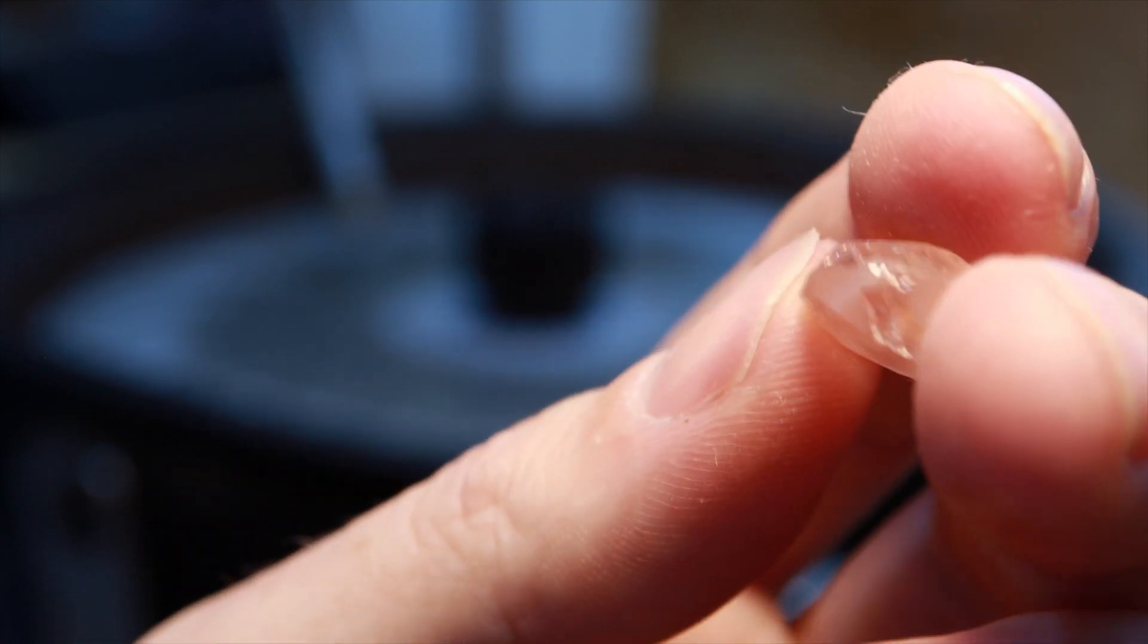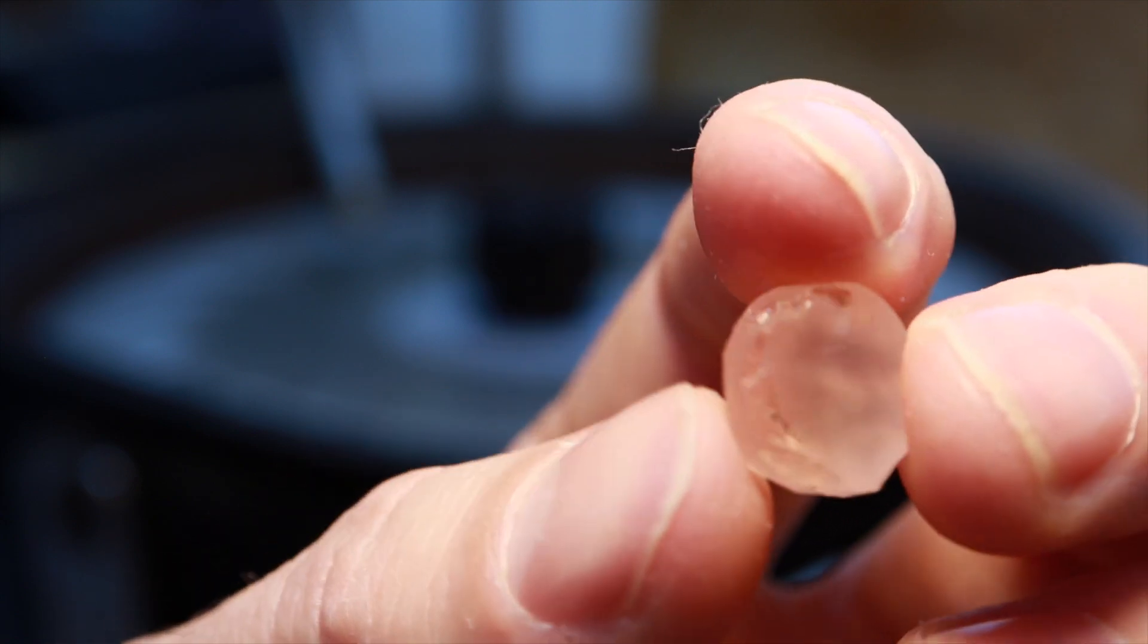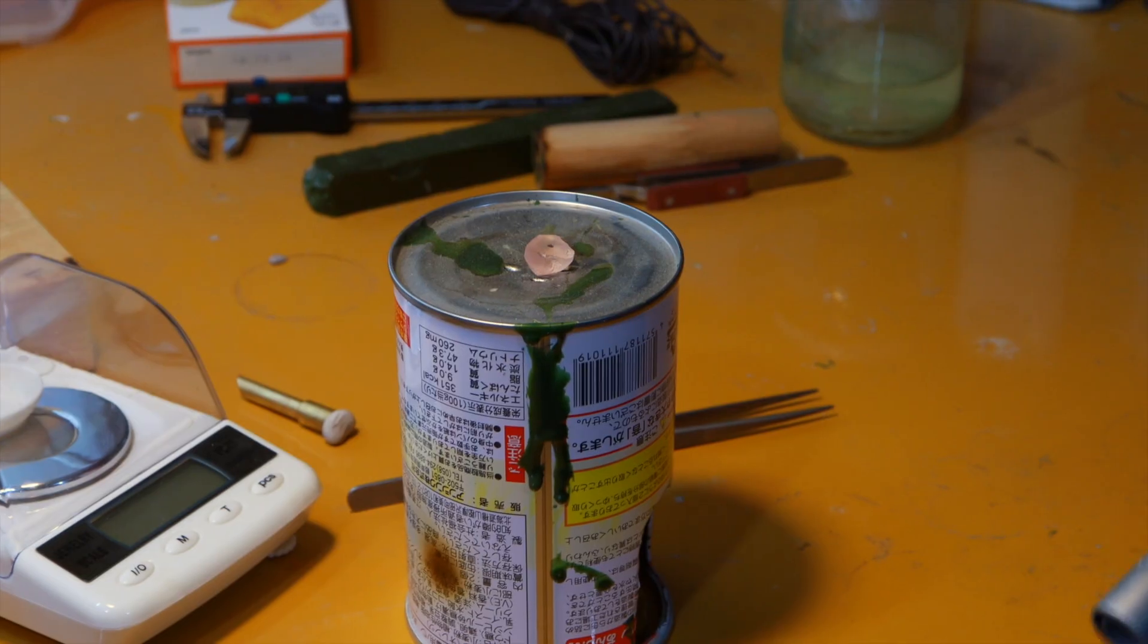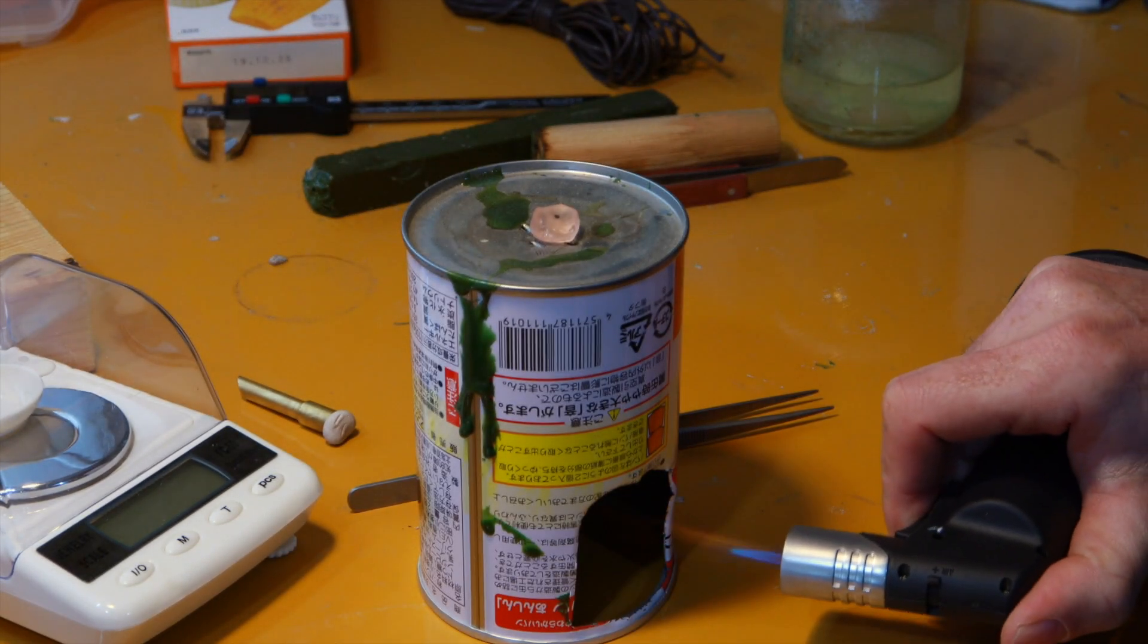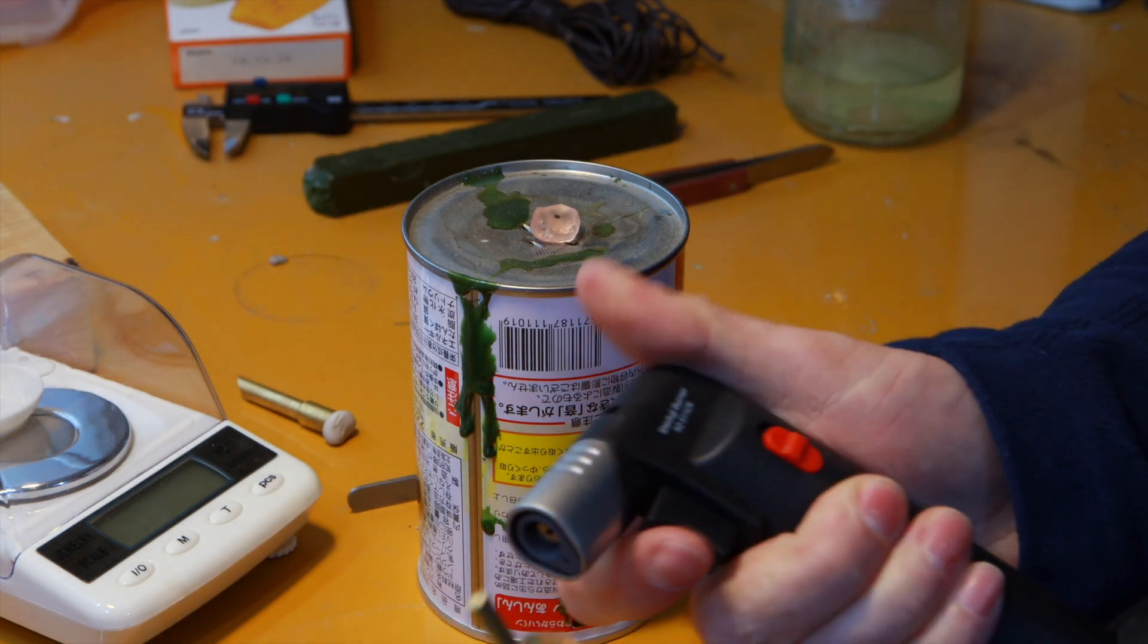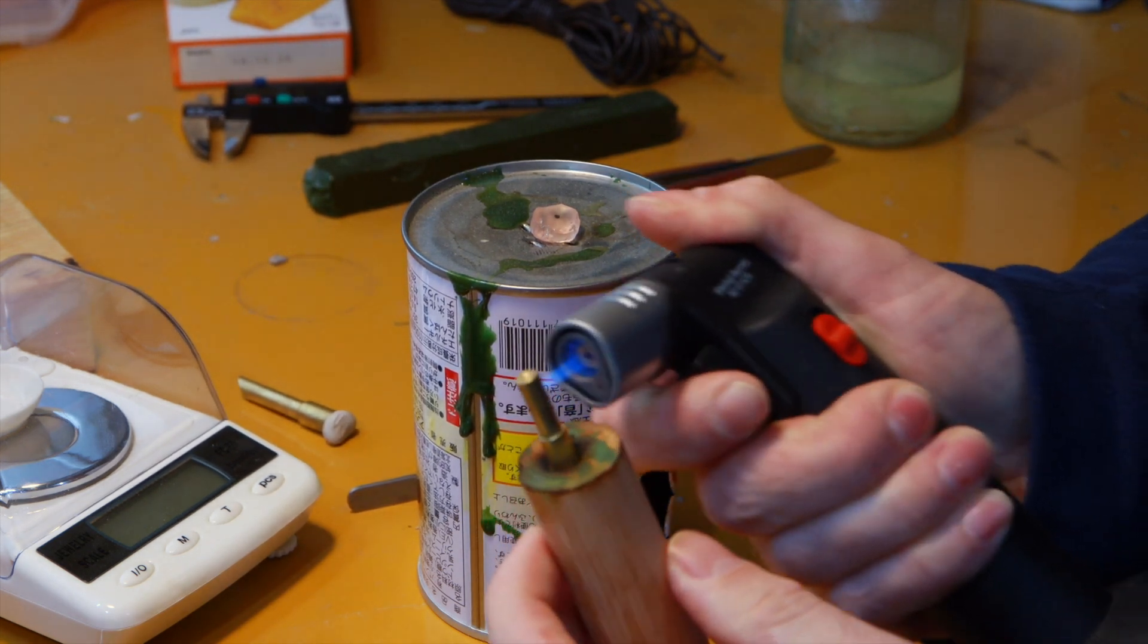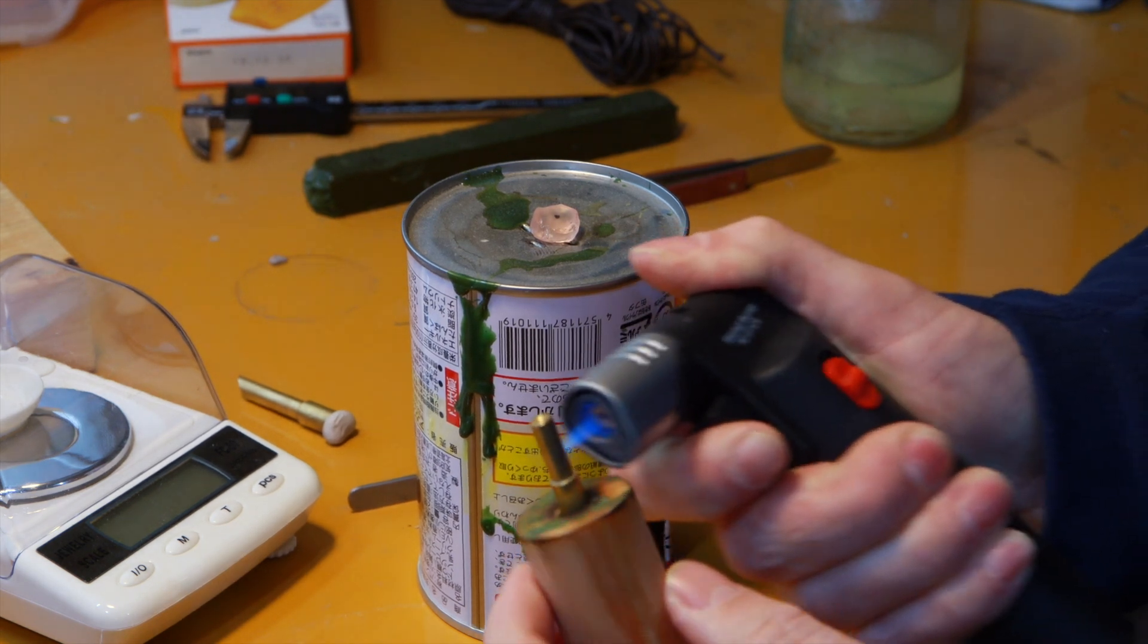I've now finished the preform and I'm going to facet this in a modified round brilliant design. I'm going to use a traditional dotting technique here. What I'm doing is heating the stone and the brass dot stick and I'm going to use a shellac-based wax to bond the stone to the dot.